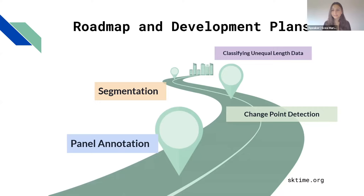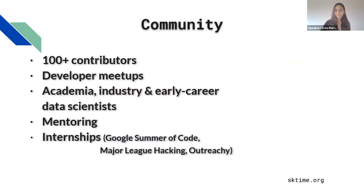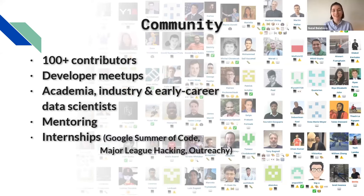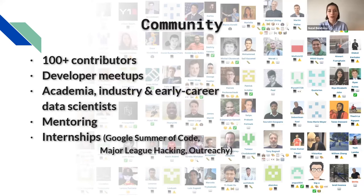Currently, goals we still want to achieve include panel annotation functionality for change point detection, segmentation, and classification of unequal length data. SK Time is not only a great toolbox — we're also a big community. We are very active and happy to welcome new contributors from different backgrounds and experience levels. For people new to open source, we provide mentorship programs and also welcome interns from Google Summer of Code or Outreachy. Come and join us.